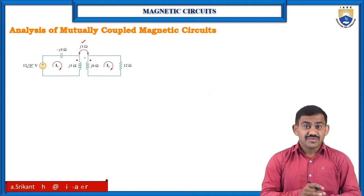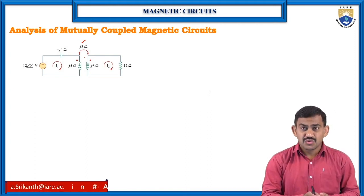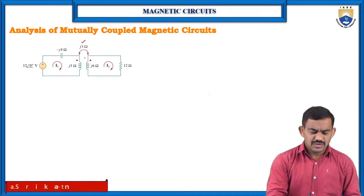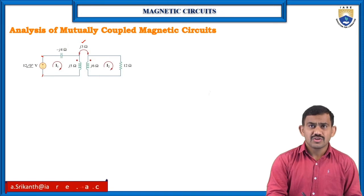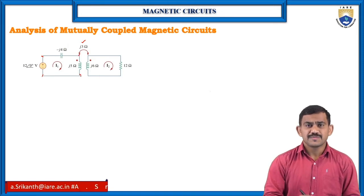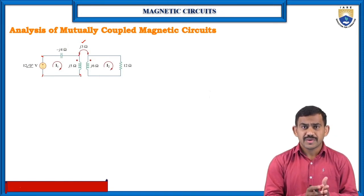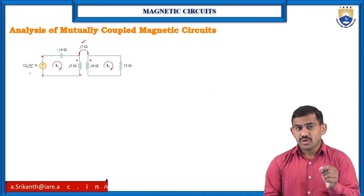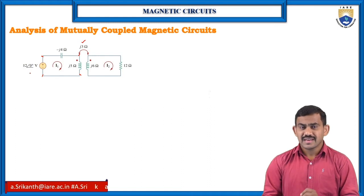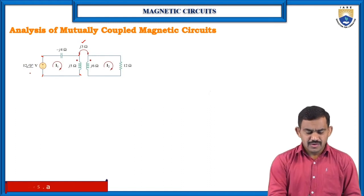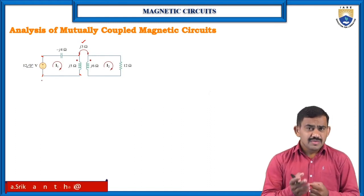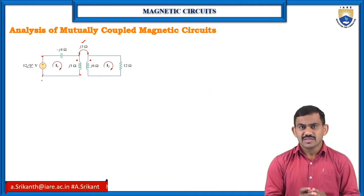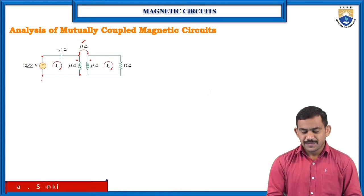Now I need to write the equation for two loops using mesh analysis — Kirchhoff's voltage law. What is the voltage drop for each element? I have a small logic for mesh analysis; just remember this logic and we will get the answer. For mesh analysis you can use this type of logic to get a simple result.